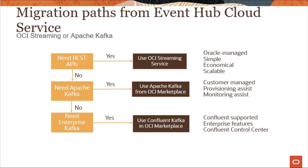Here's a quick overview of the migration path from Event Hub Cloud Services. If you need REST APIs, use OCI Streaming Service — Oracle-managed, simple, economical, and scalable. If you need Apache Kafka, you can use Apache Kafka from the OCI Marketplace, which is customer-managed with provisioning assistance provided. If you need enterprise Kafka, you can use Confluent Kafka from the OCI Marketplace — it is Confluent-supported with enterprise features and Confluent Control Center.